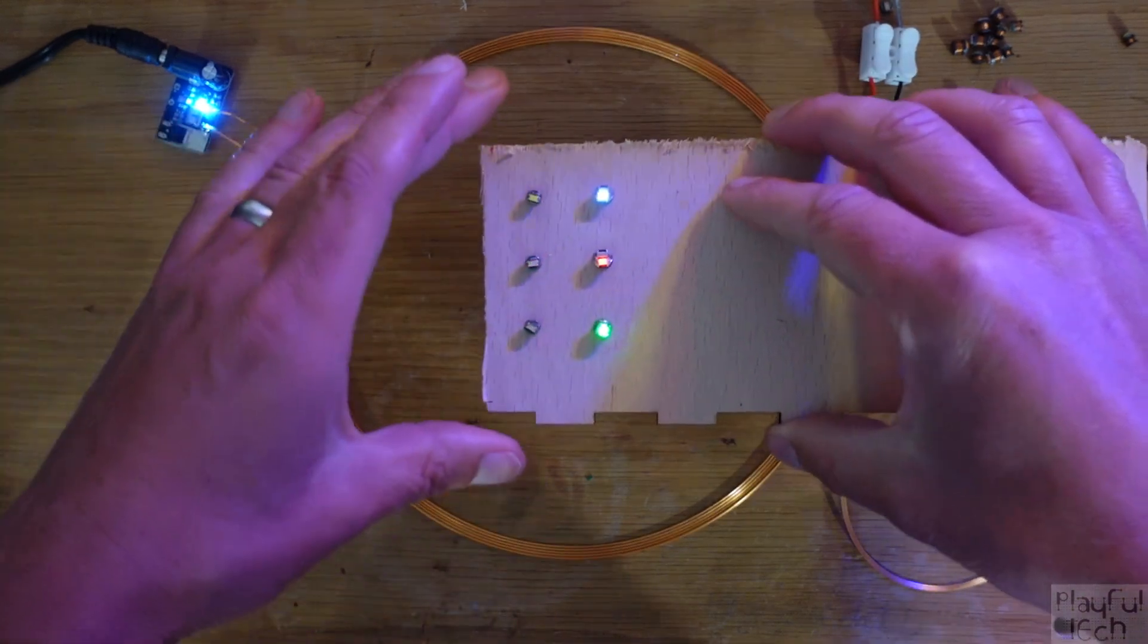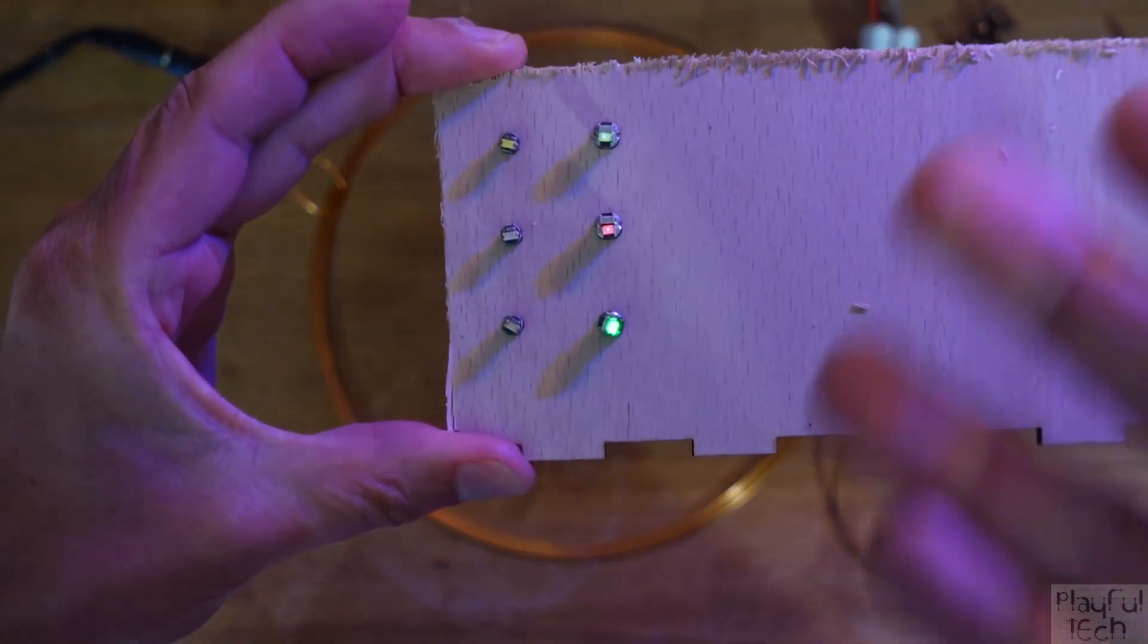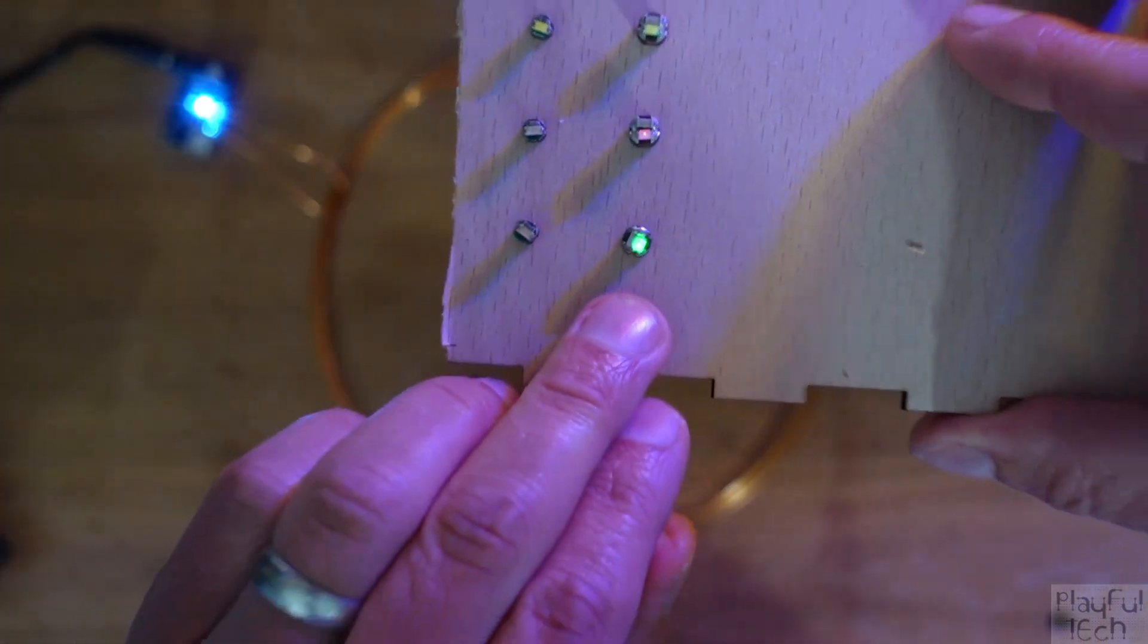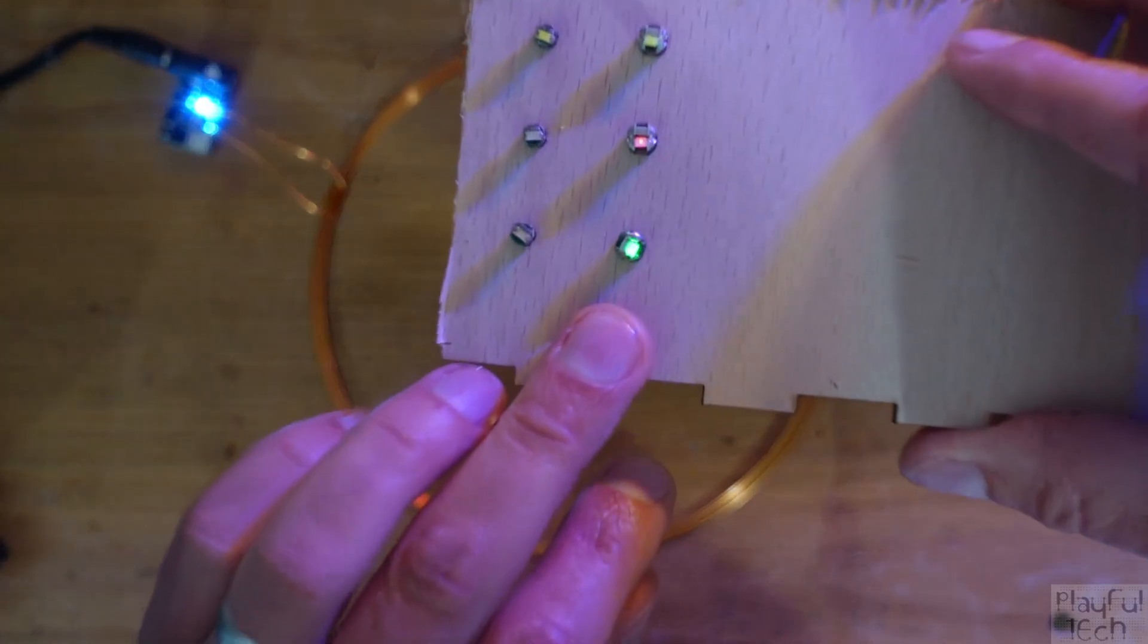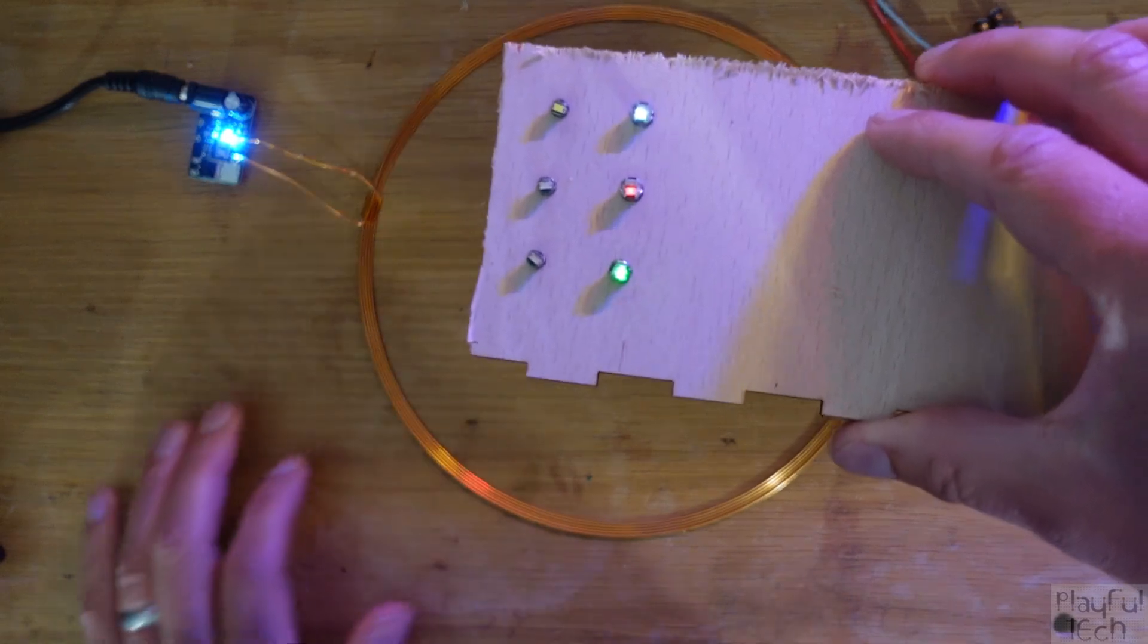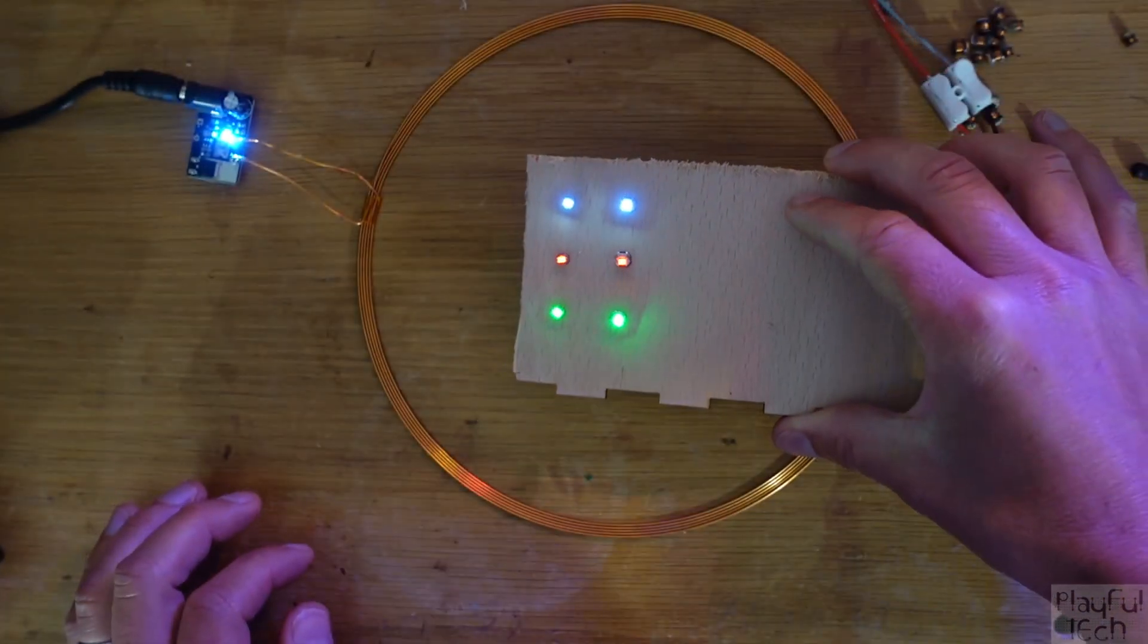But if you want to get the best performance in terms of simply the most wow factor to use in a prop like an escape room, I would recommend using the green LEDs, the 5mm green LEDs and a 20cm coil diameter. That seems to be the most effective I've seen.